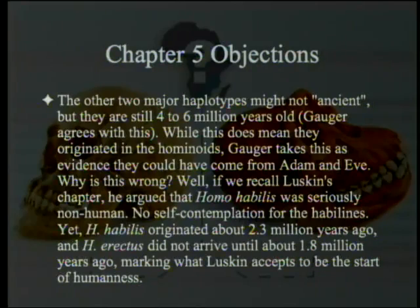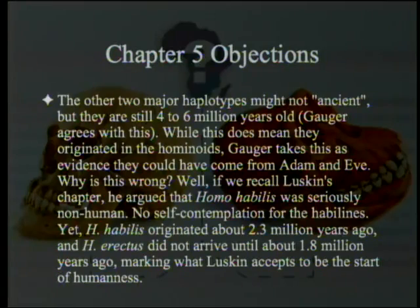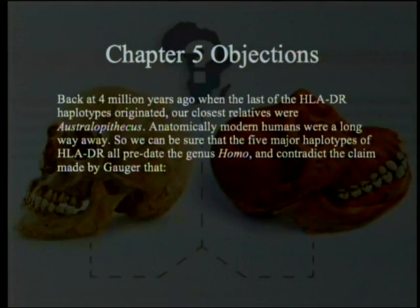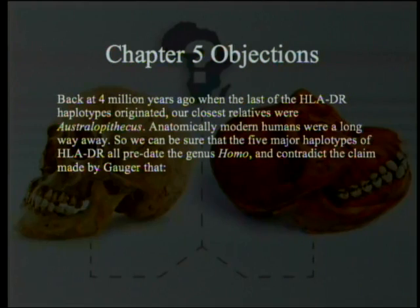Unfortunately for Gauger, even if we accept all parts of her argument up to here, we are forced to conclude that this final step is wrong if the book is to be internally consistent. The other two major haplotypes might not be ancient, but they are still four to six million years old. While this does mean they originated in the hominoids, Gauger takes this as evidence that they could have come from Adam and Eve. But if we recall Luskin's chapter, he argued that Homo habilis was seriously non-human, yet Homo habilis originated about 2.3 million years ago. Back at 4 million years ago, our closest relatives were Australopithecus — anatomically modern humans were a long way away. So we can be sure that the five major haplotypes of HLA-DR all predate the genus Homo and contradict Gauger's claim.